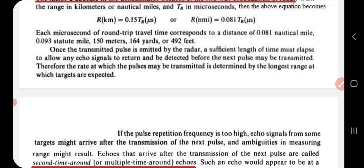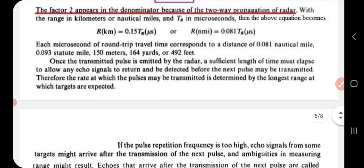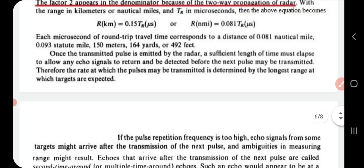Once the transmitted pulse is emitted by the radar, a sufficient length of time must elapse to allow any echo signal to return and be detected before the next pulse may be transmitted. Therefore, the rate at which pulses may be transmitted is determined by the longest range at which targets are expected.